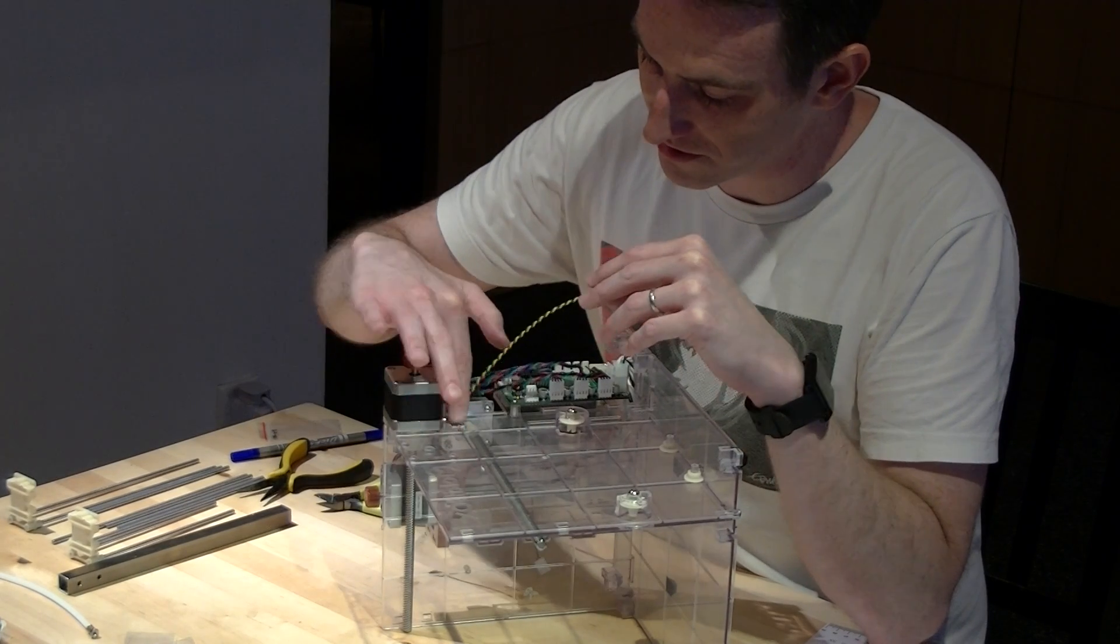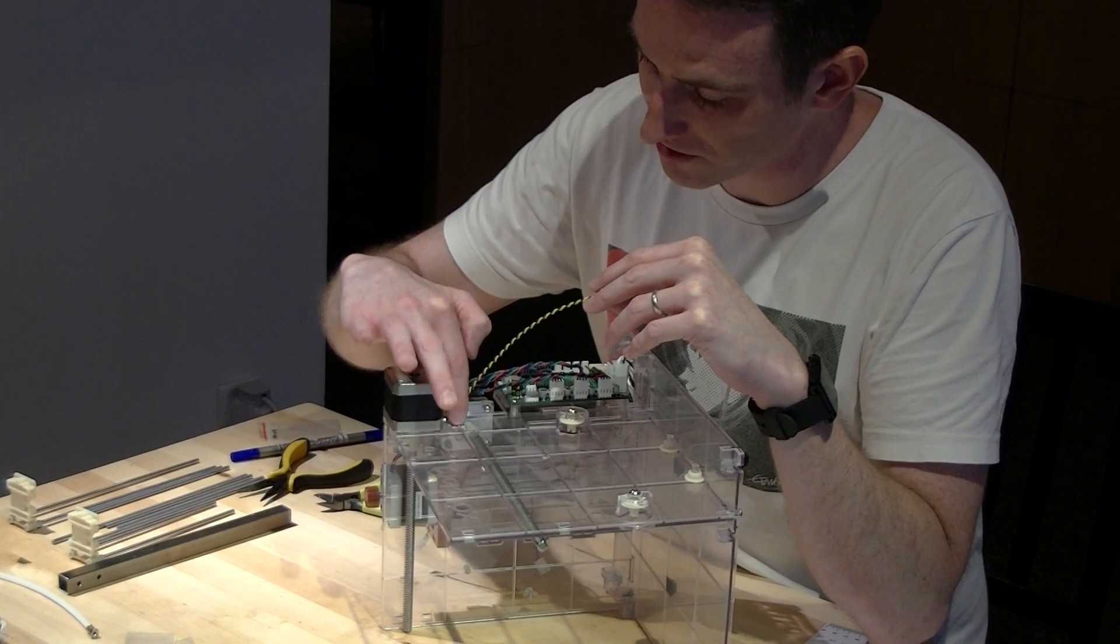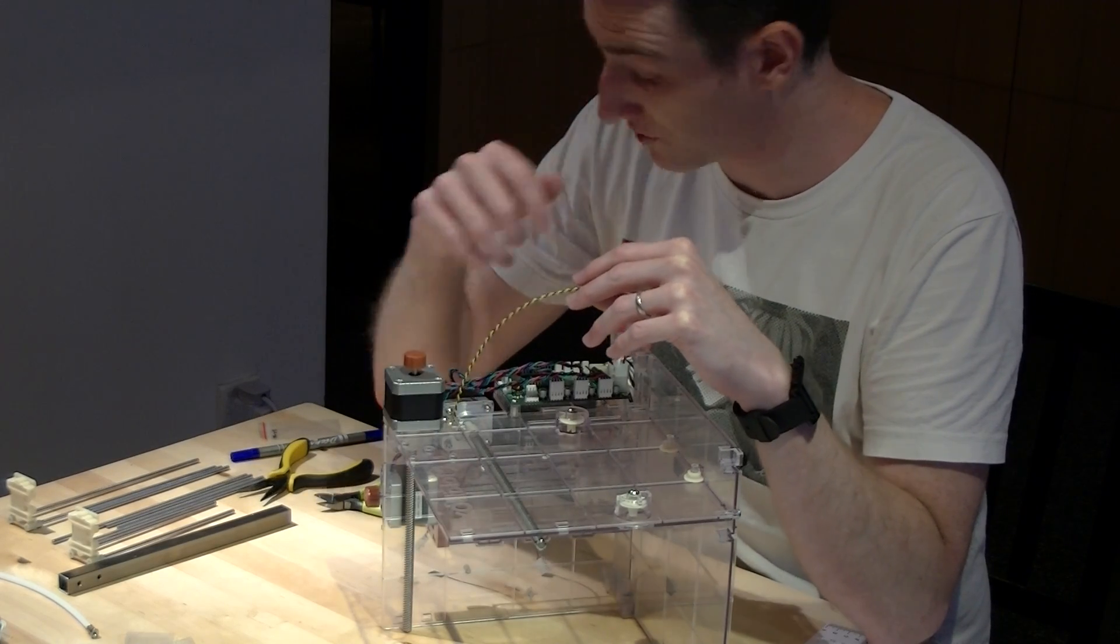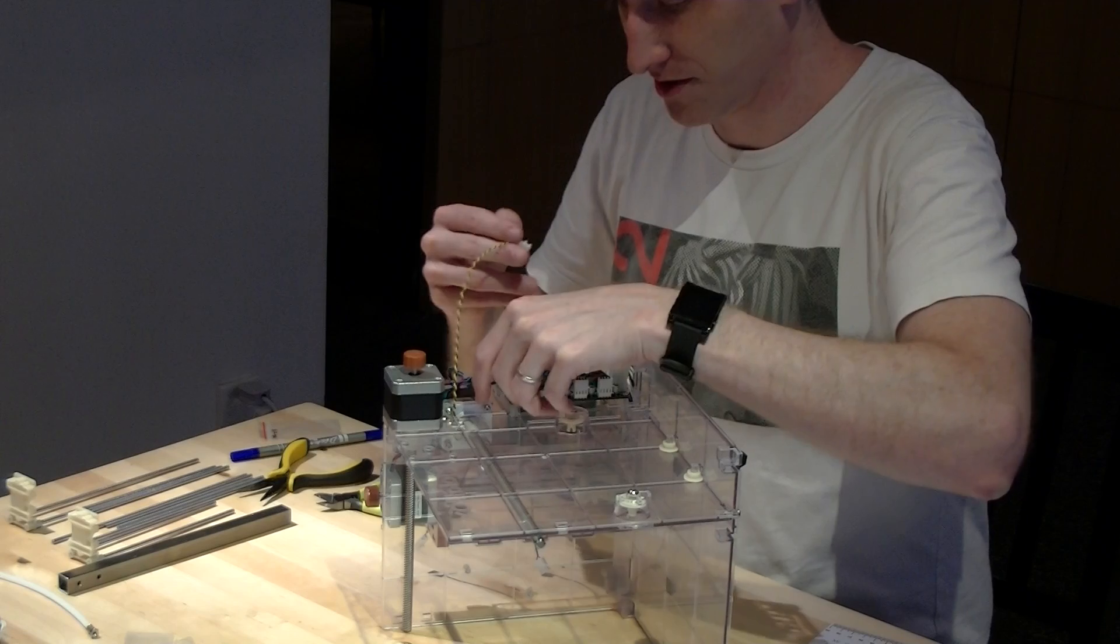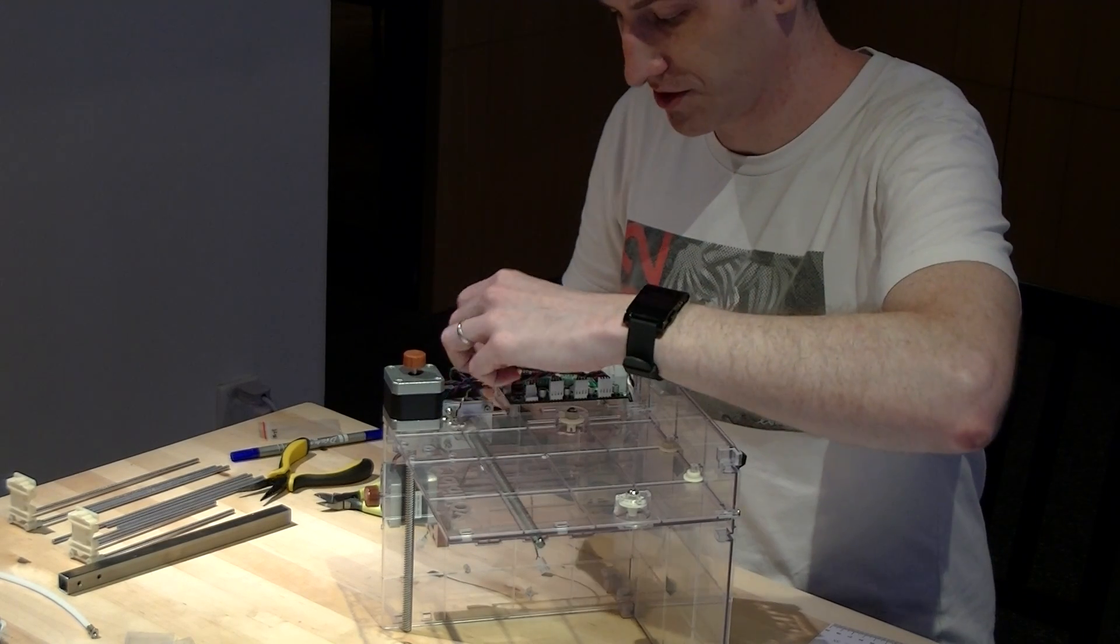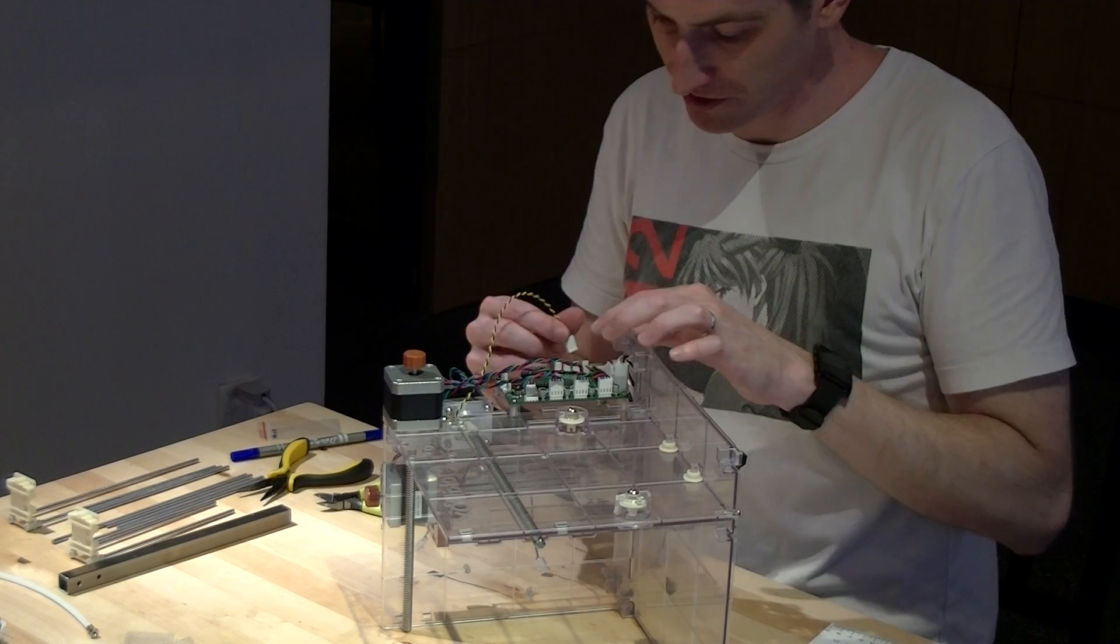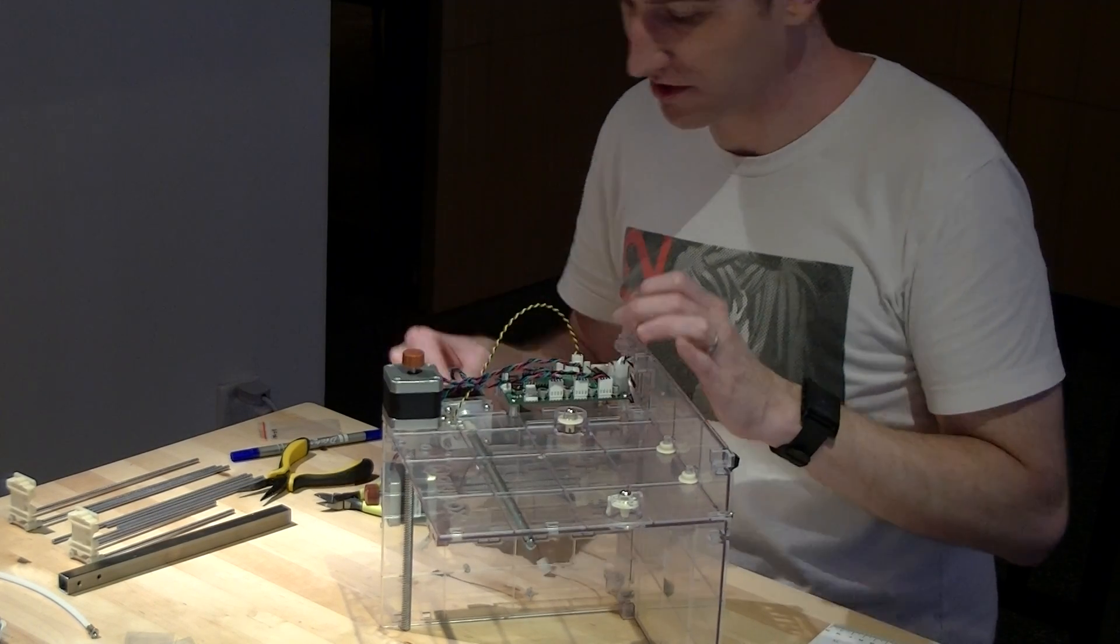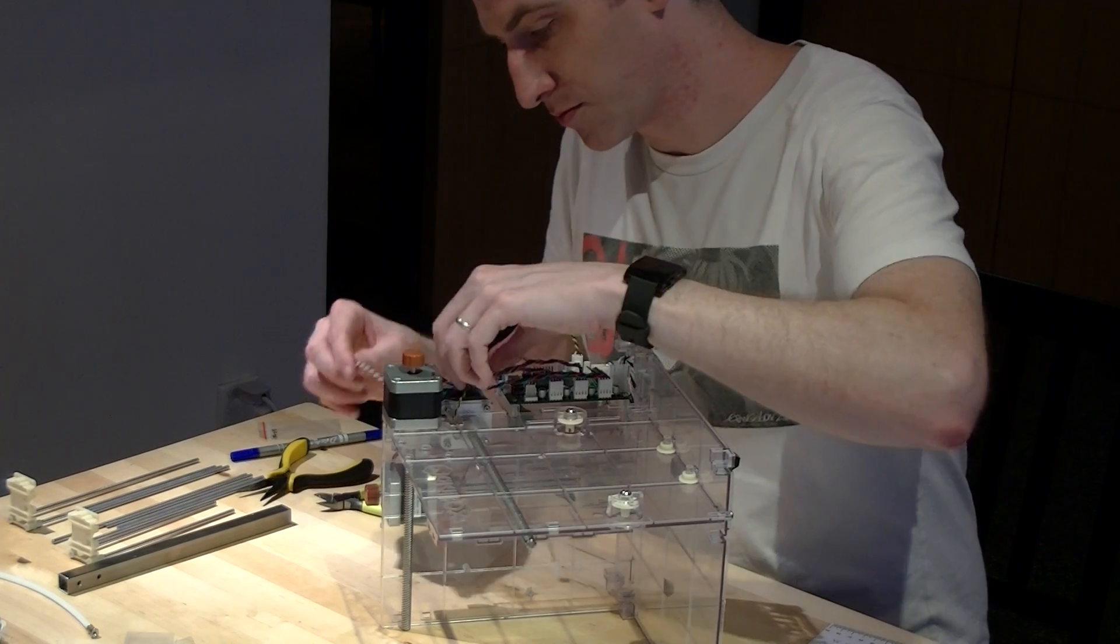So basically, if you follow down to the limit switch, the limit switch that is pointing in this direction is the Y limit. Just tucking it under the motor wires, and then it goes in the second position there.